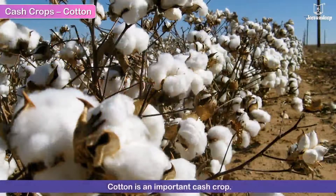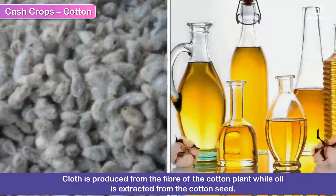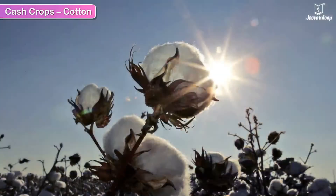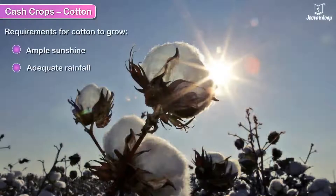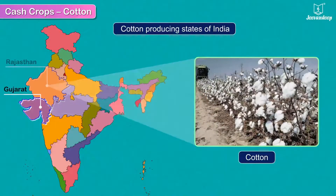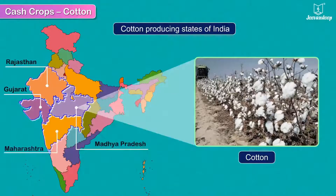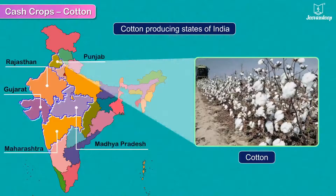Cotton is an important cash crop. Cloth is produced from the fibre of the cotton plant, while oil is extracted from the cotton seed. The cotton plant needs ample sunshine and adequate rainfall to grow well. Cotton is grown in Gujarat, Rajasthan, Maharashtra, Madhya Pradesh, and Punjab.